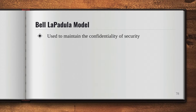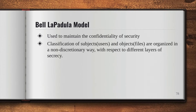So what is the Bell-LaPadula model? It's used to maintain the confidentiality of security — it's a security model. The classification of subjects, which are treated as users, and objects, which are files, are organized in a non-discretionary way with respect to different layers of secrecy. It decides what rights need to be given to whom.